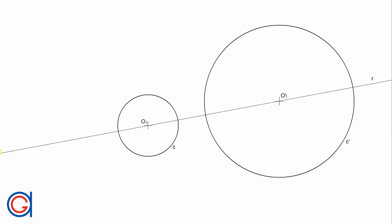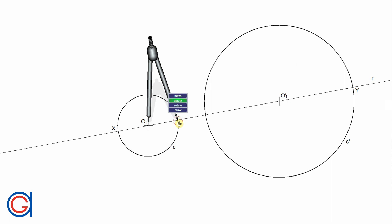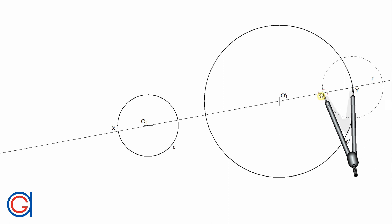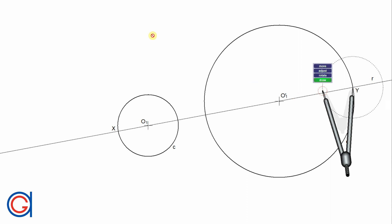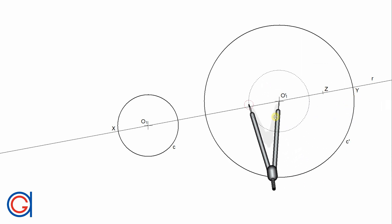We get two new points, which we will call X and Y, at the external intersections with both circles C and C prime, as you can see here on the screen. Next, we are going to subtract the radius of C from the radius of C prime. To do this, setting our compass to the length O1X, we transport it from the extremity point Y, obtaining a new point Z, as can be seen here.